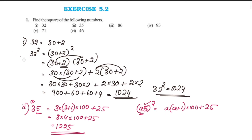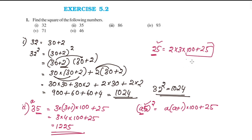We can also verify using the method: 3 into (3+1) into 100 plus 25. That is 3 into 4 is 12, times 100 is 1200, plus 25 is 1225. So 35 squared equals 1225.